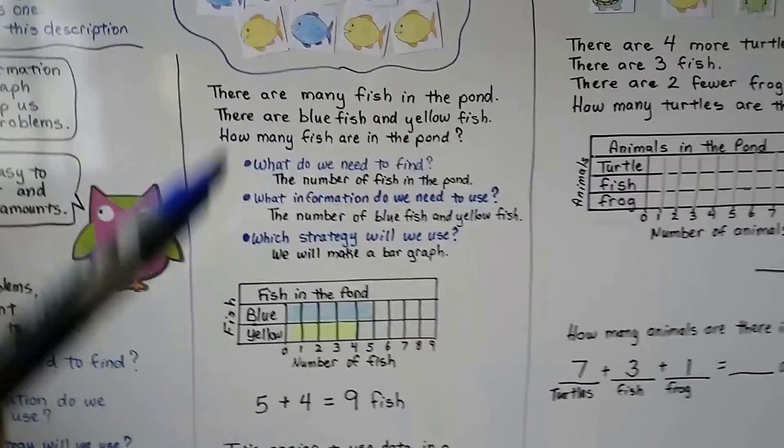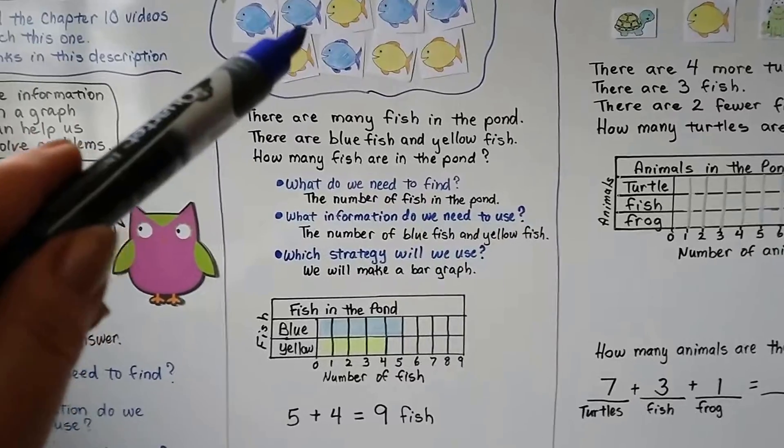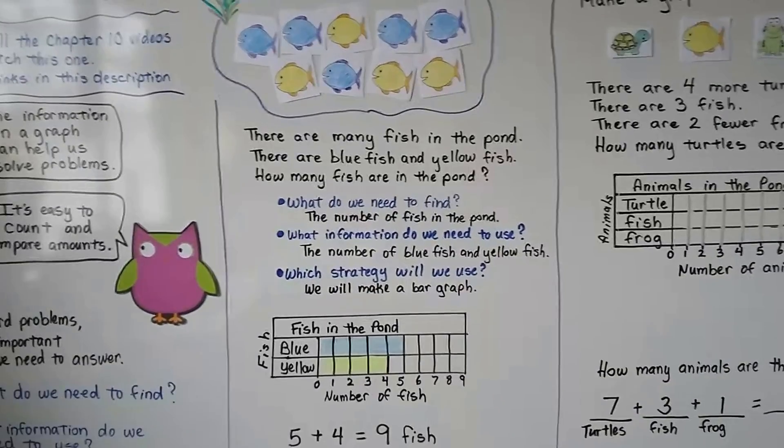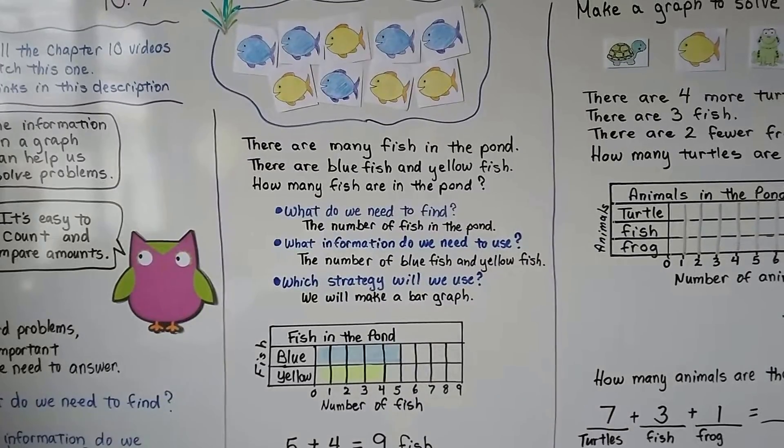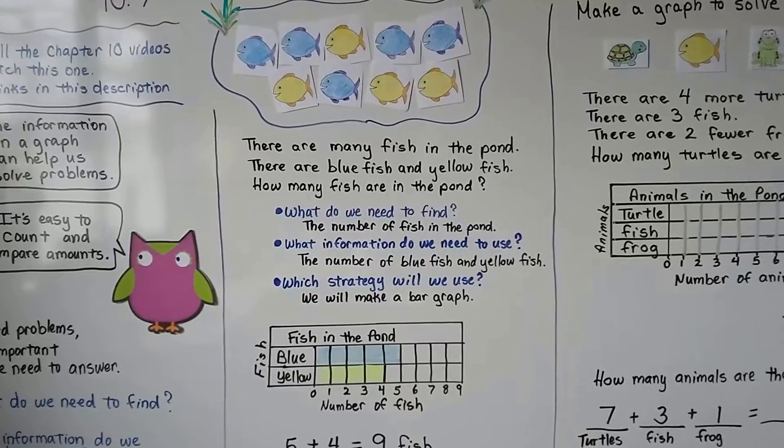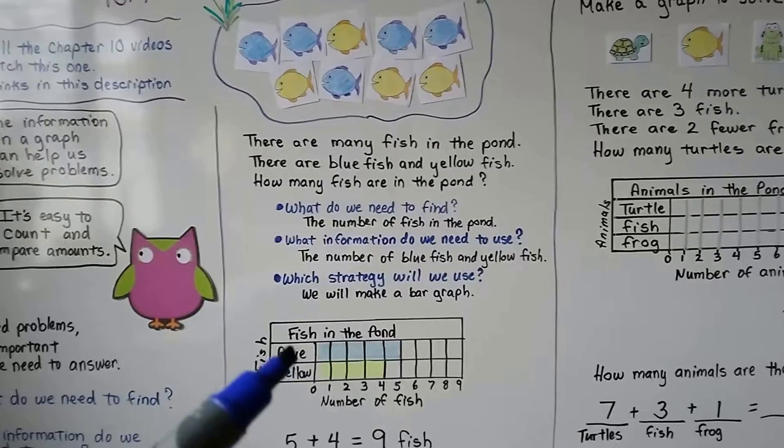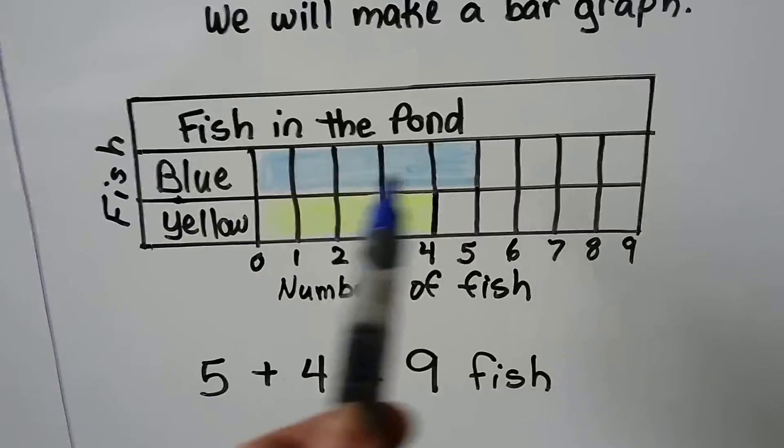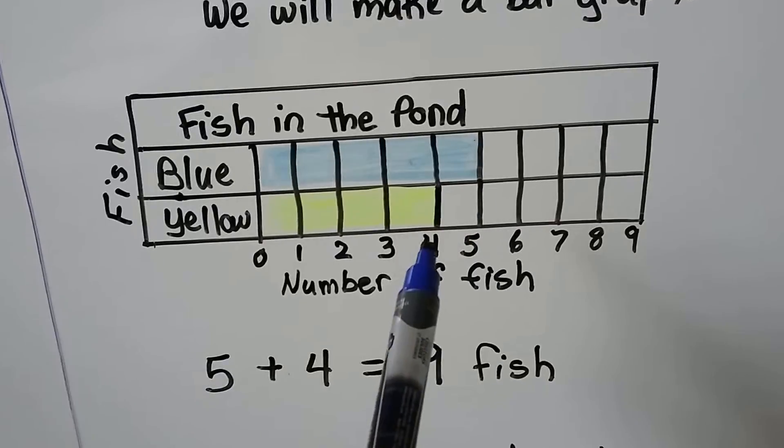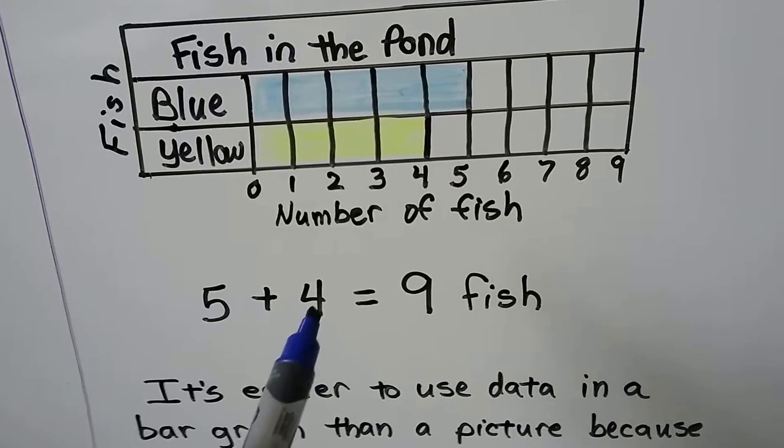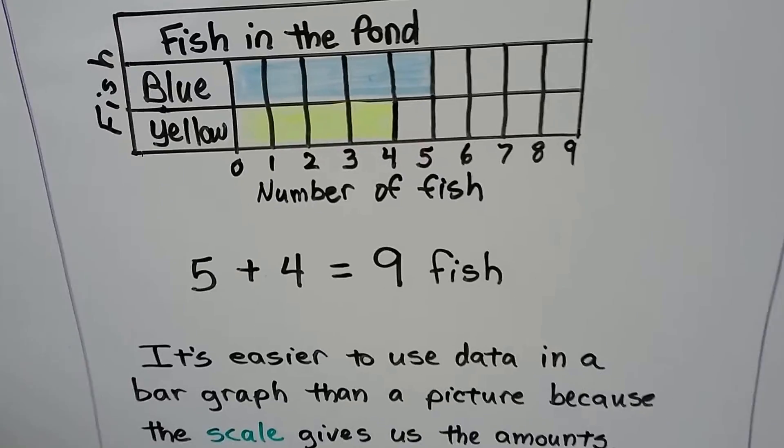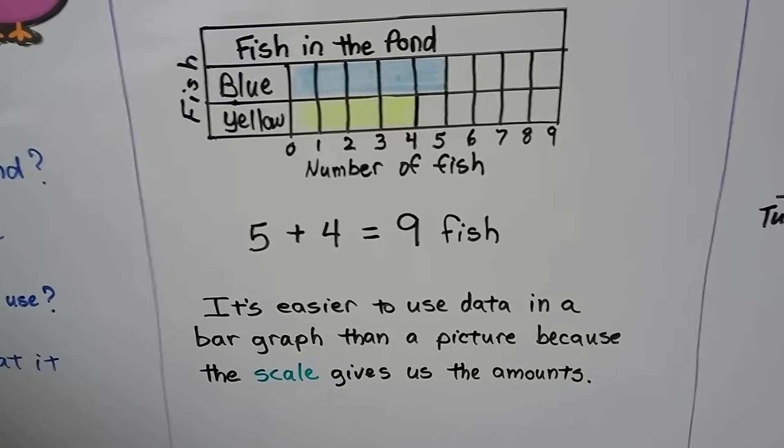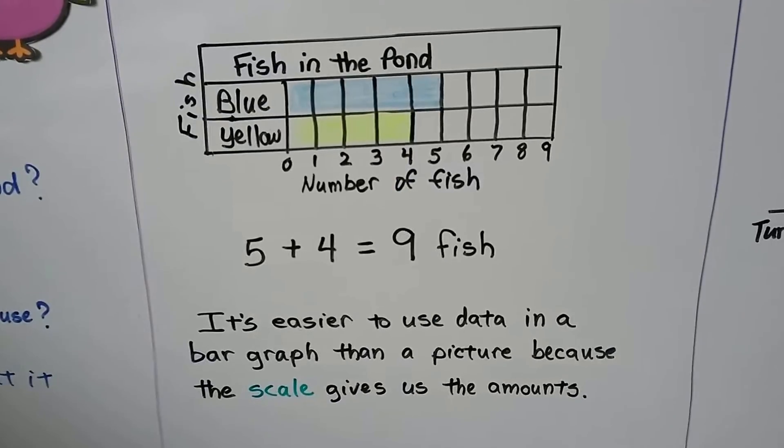Now, if you were to look at this very quickly, the picture compared to the bar graph, which one do you think would be the fastest way to find how many fish there are in the pond? Or how many blue fish or yellow fish? It's going to be easier to look at the graph because we don't need to count. It did the counting for us. It's telling us there's five blue and four yellow. We can add the five plus four and we know there's nine fish. So it's easier to use data in a bar graph than a picture because the scale gives us the amounts. We don't have to count.